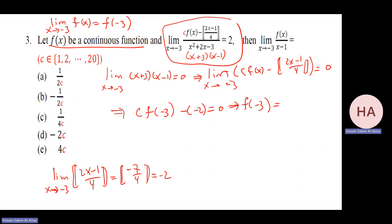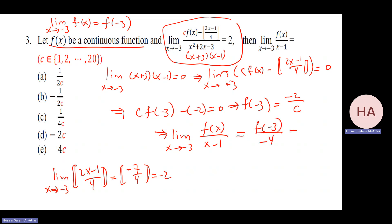From this we have c times f of minus three minus minus two equals zero, so f of minus three equals minus two over c. That means the limit as x goes to minus three of f of x over x minus one will be f of minus three over minus four, and that will be one over two c.